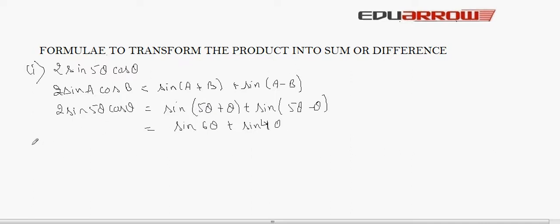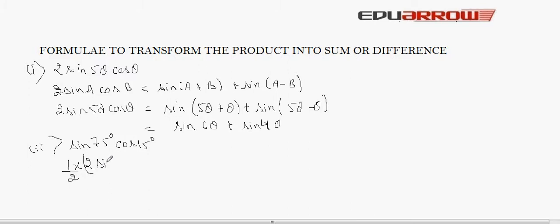Let us see one more question. Here we have to convert sin75° cos15° into a sum. To use the formula 2 sinA cosB, we first multiply and divide by 2. So this becomes one-half times 2 sin75° cos15°. We need to bring in the factor of 2 to apply the formula.